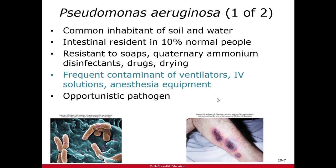The most common Pseudomonas that causes issues in humans is Pseudomonas aeruginosa. It's mostly found in soil and water, but some people carry it as part of their normal flora in their intestinal tract. It is becoming resistant — resistant to soaps, various disinfectants, antibiotics, and drying out. We find this bacteria in hospital settings; it is a frequent contaminant of ventilators, IV solutions, and anesthesia equipment, and it's an opportunistic pathogen.